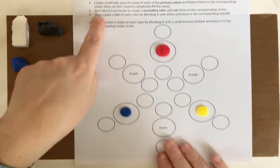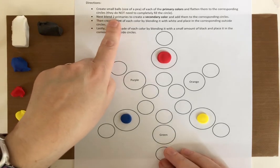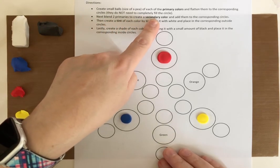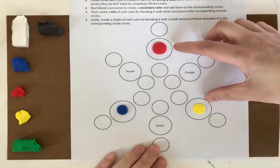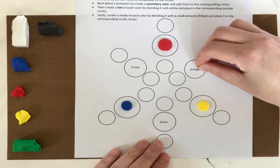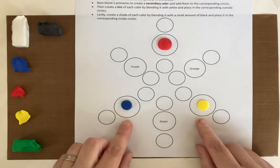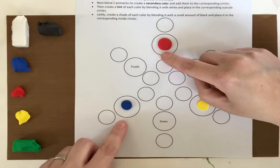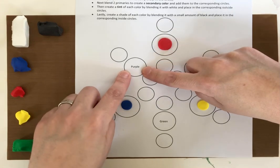Then after that we're going to be blending two primaries to create a secondary color. We're going to add those to the corresponding circles. So if you take red and yellow and mix it together in equal amounts you're going to get an orange, yellow and blue you're going to get green, blue and red you're going to get purple.